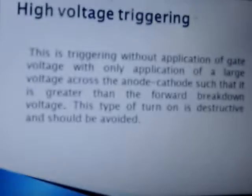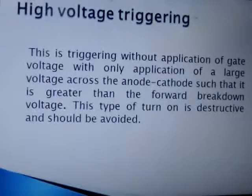To broadly summarize the definition of high voltage triggering or forward breakdown triggering: it means turning on the thyristor by exceeding the breakdown voltage at junction J2.